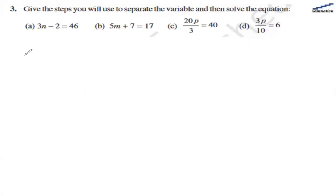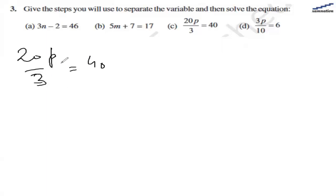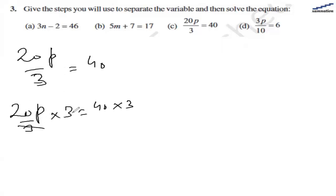For part (c) we have 20p divided by 3 equal to 40. The first step is to multiply both sides by 3. So we have 2p over 3 multiplied by 3 equal to 40 multiplied by 3. The 3s cancel and give us 1, so we are left with 20p on the left and 40 multiplied by 3 which is 120 on the right.